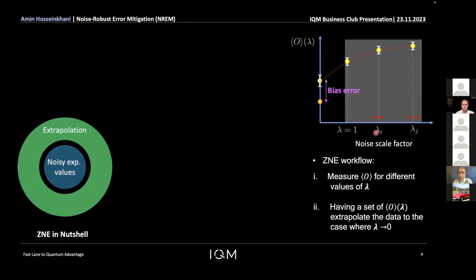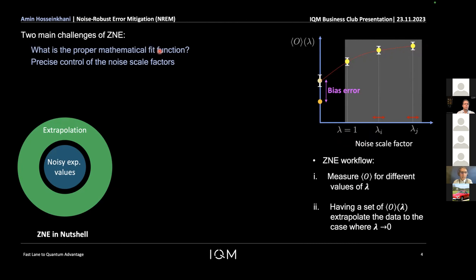There is always a bias error in zero noise extrapolation for two main reasons: first, the best mathematical fit function is not clear; second, it is crucial that we can precisely amplify the noise, because imprecision manifests as bias error. In NREM, we split between the inner layer — collecting noisy expectation values — from the outer extrapolation layer via a middle layer that performs a noise-cancelling process. The core idea is that we establish a connection between this unknown bias error to a tunable cost function, and by minimizing the cost function the bias error is significantly reduced, also tolerating inaccuracies in noise amplification.